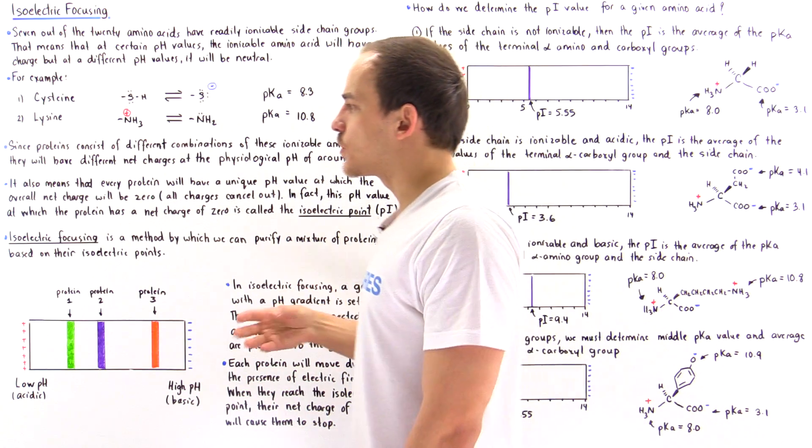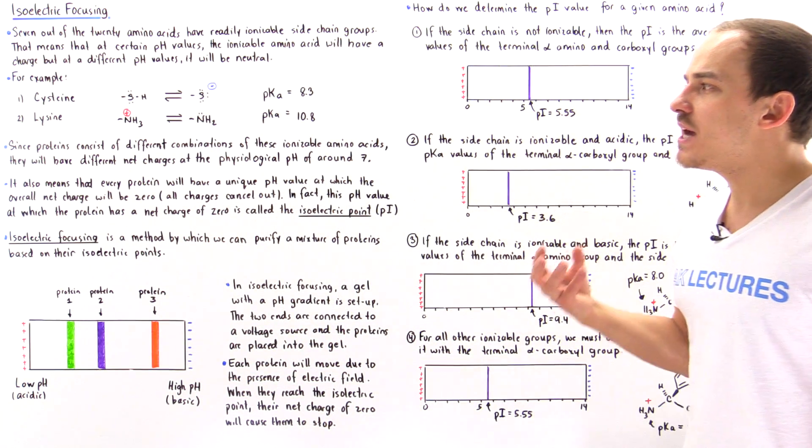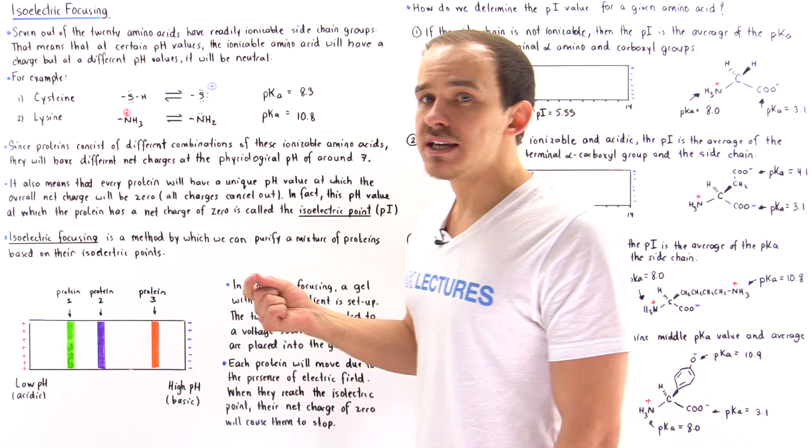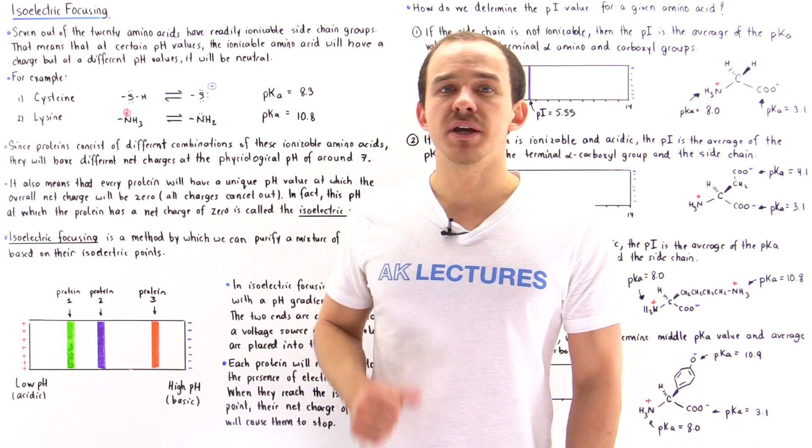Now in the next lecture we're going to take a look at how to actually determine what the pI value is of proteins or polypeptides that consist of two or more amino acids.